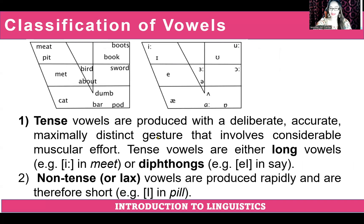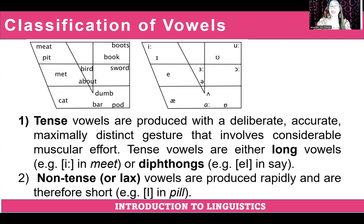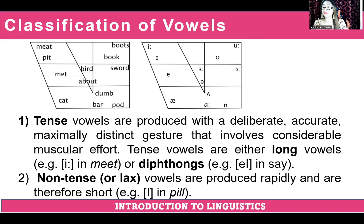To better understand the difference between tense and lax vowels: tense vowels are produced with a deliberate, accurate, maximally distinct gesture that involves considerable muscular effort. Tense vowels are either long vowels, as in the EE in meet, or diphthongs, as in the A sound in say. Non-tense or lax vowels are produced rapidly and are therefore short, as in the short vowel in peel versus the tense one. So tense means long, and non-tense means short.